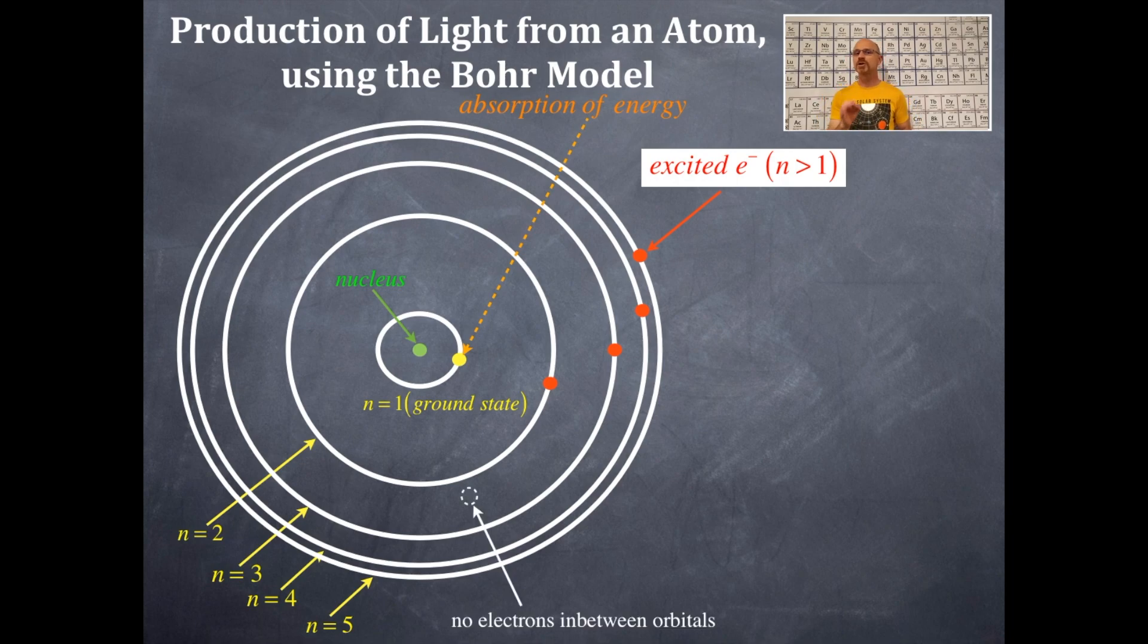Now, I want you to notice something here. That there are no electrons in between orbitals. So, it's one of the rules for the Bohr model is that you cannot have electrons in between the orbitals.